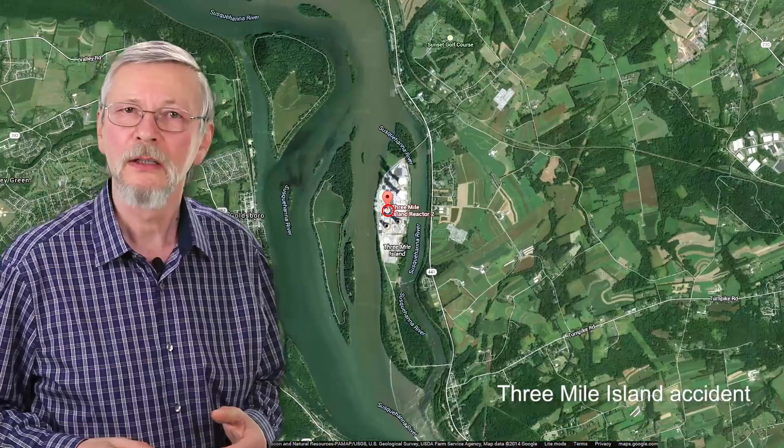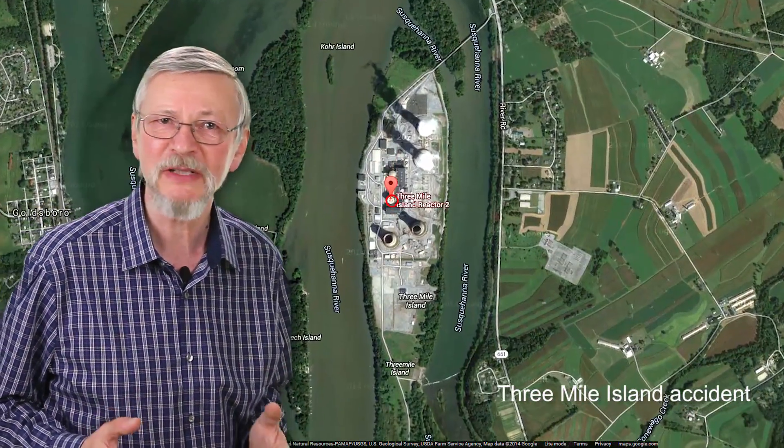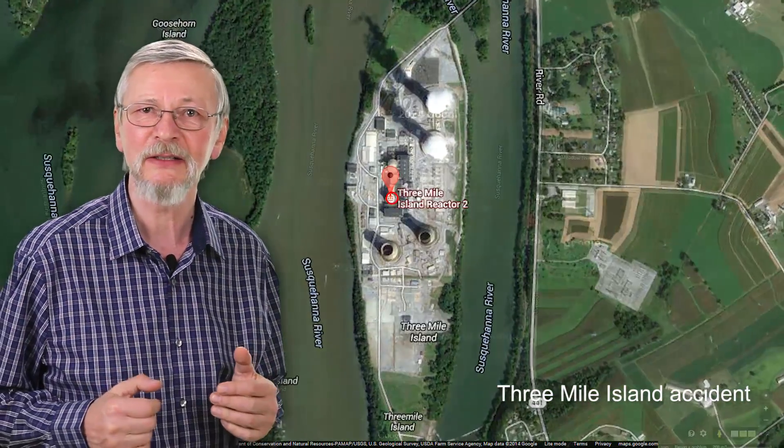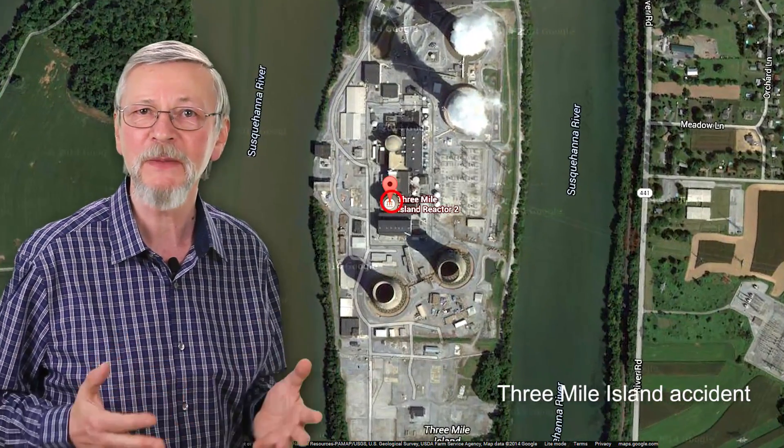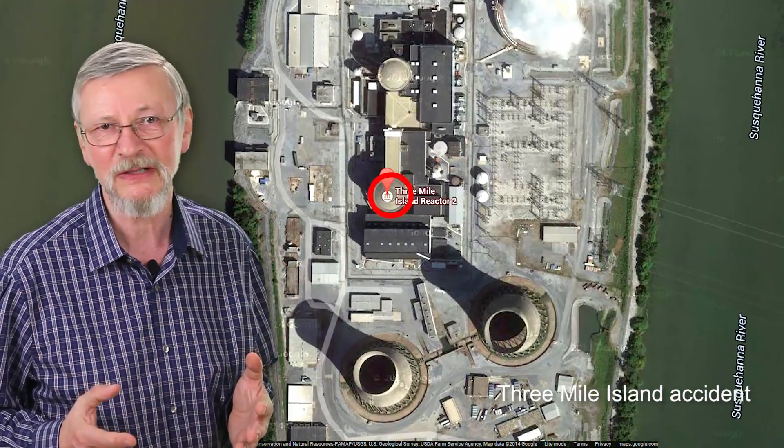Nuclear energy is one alternative to fossil fuels. It is generated through a controlled nuclear fission reaction, where a nucleus of an atom splits into smaller parts and releases energy. The energy heats water and produces steam, which moves the turbines. Nuclear energy poses safety concerns. Some of the most notable nuclear power plant accidents include the Chernobyl disaster in Ukraine, the Three Mile Island accident in the USA, and the Fukushima disaster in Japan.